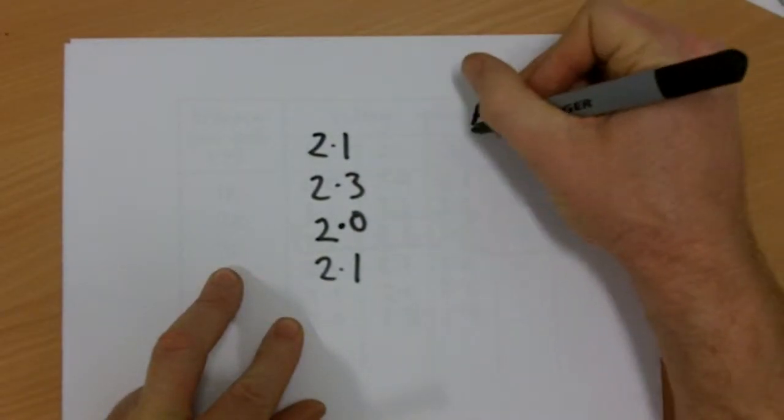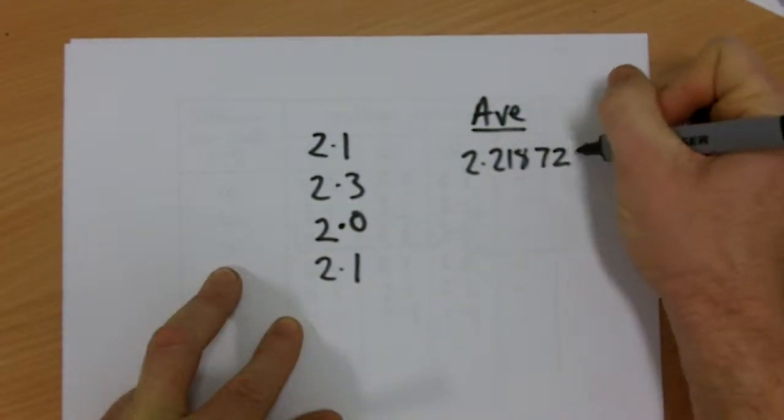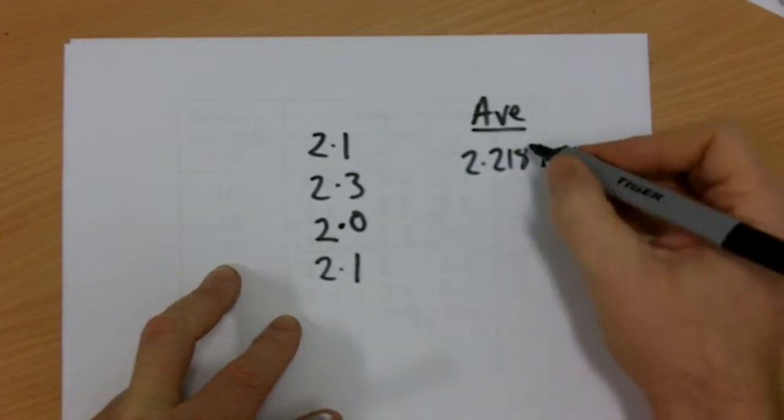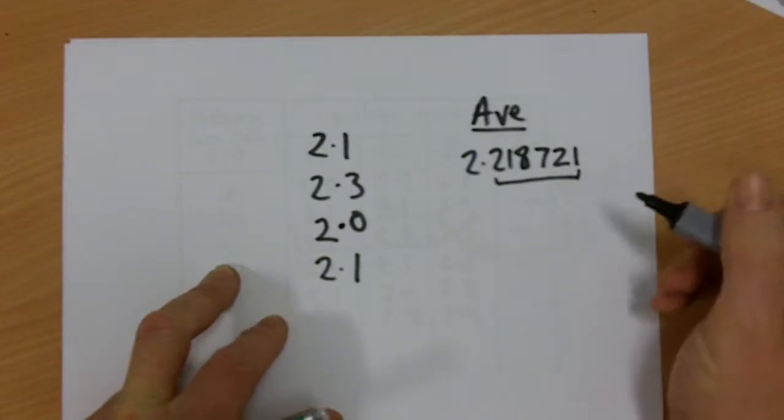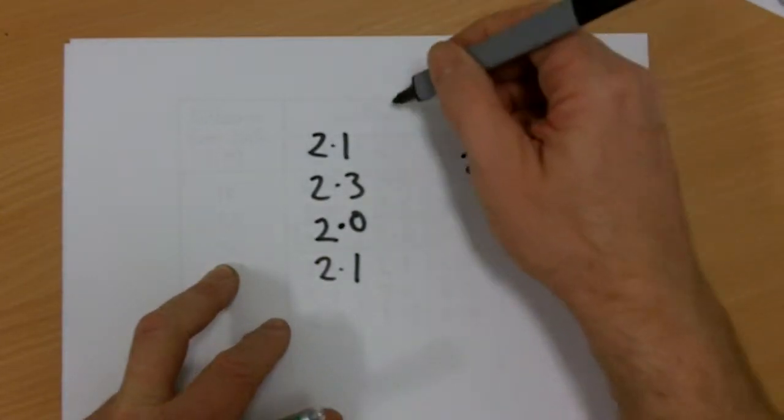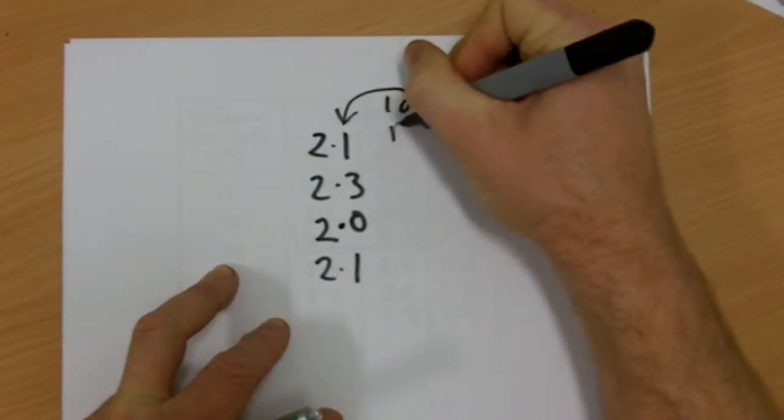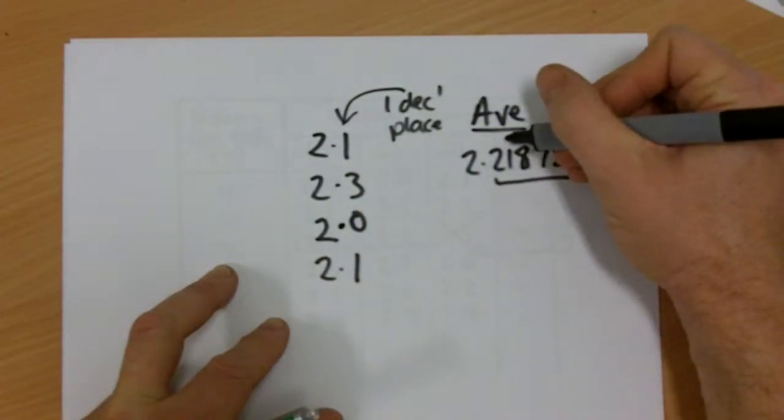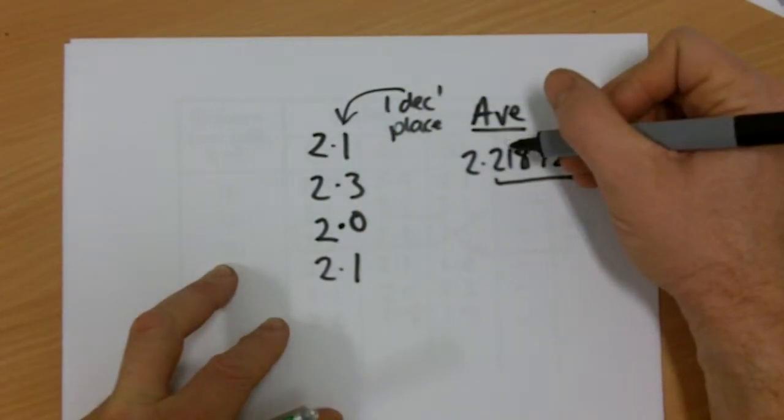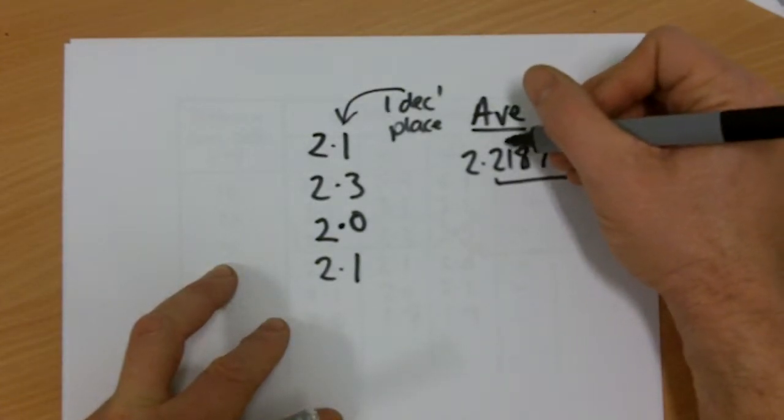Now, these lots of decimal places here, most of them aren't relevant because if you've only used one decimal place in your readings, then you can only really truthfully be certain of the effectiveness or the accuracy of those results, or the precision of those results, I should say, to one decimal place.